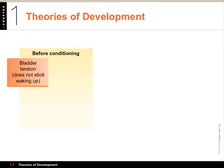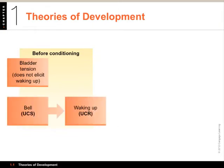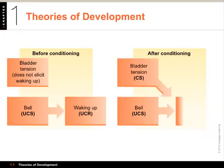In the Pavlovian kind of conditioning, before conditioning, a child has bladder tension but doesn't wake up — they just wet their diaper. You can address this with an unconditioned stimulus: a bell will wake kids up automatically — that's the unconditioned response. By pairing bladder tension with waking up, bladder tension becomes the conditioned stimulus, and eventually they wake up from bladder tension alone without needing the bell. That's developing a passive association.